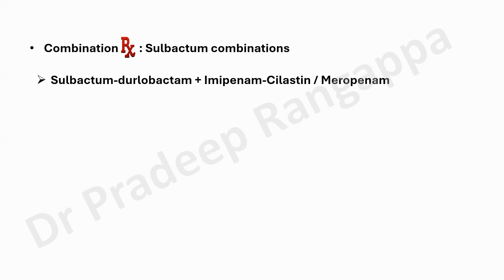There was a nice trial called the ATTACK trial, published in 2023 in The Lancet. They compared sulbactam-durlobactam along with imipenem-cilastatin versus colistin with imipenem-cilastatin, and found that sulbactam-durlobactam was non-inferior to the colistin combination, with some signals suggesting it may be slightly better. That is why IDSA recommends sulbactam-durlobactam with imipenem or meropenem.